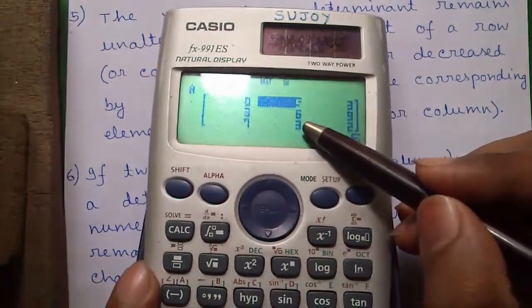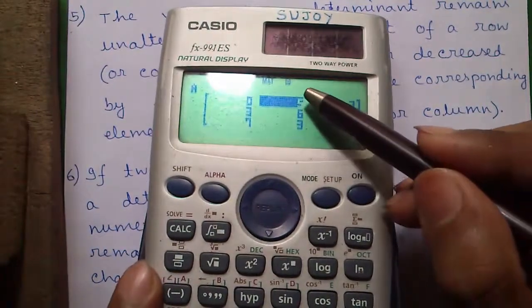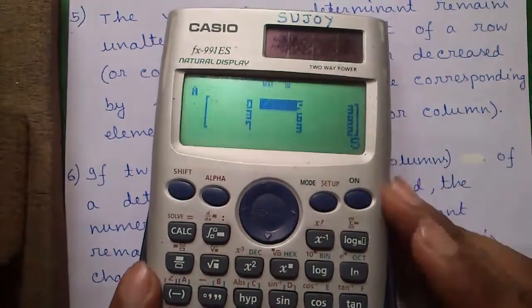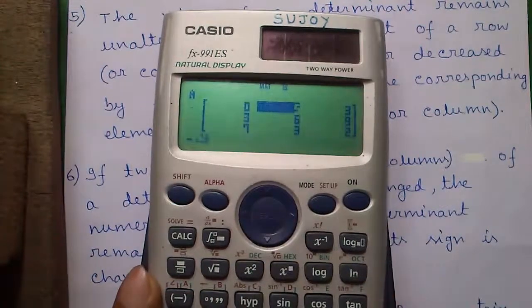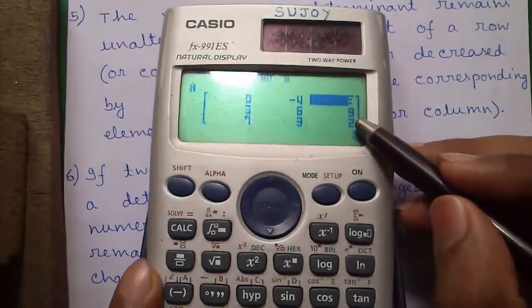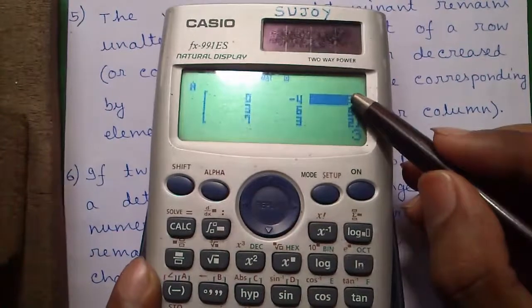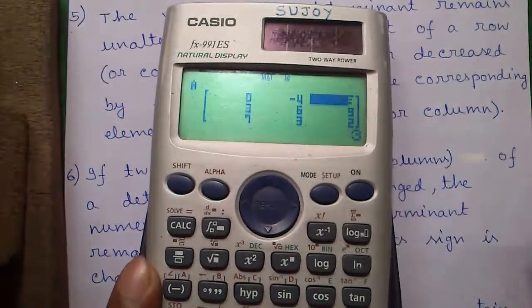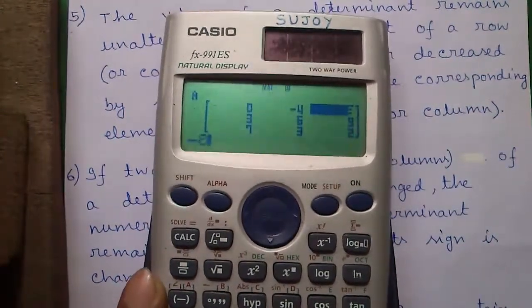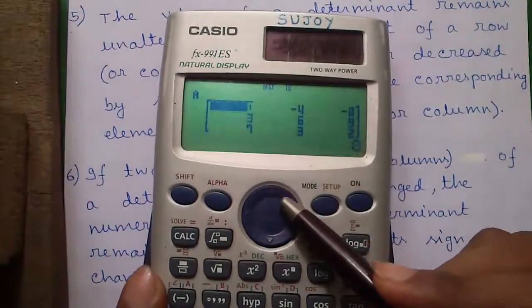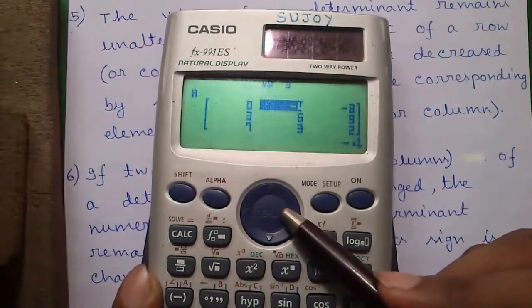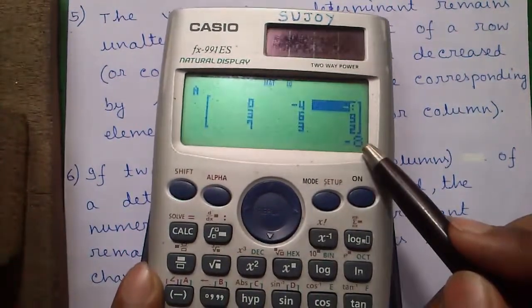Next, this is 6 and 3 that is 9. So 5 minus 9 is minus 4 and this is 9 and this is 2. So 9 plus 2 is 11 and this is 3. So 3 minus 11 is minus 8.